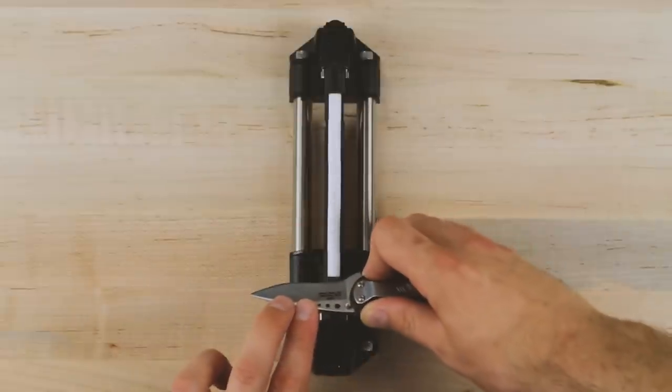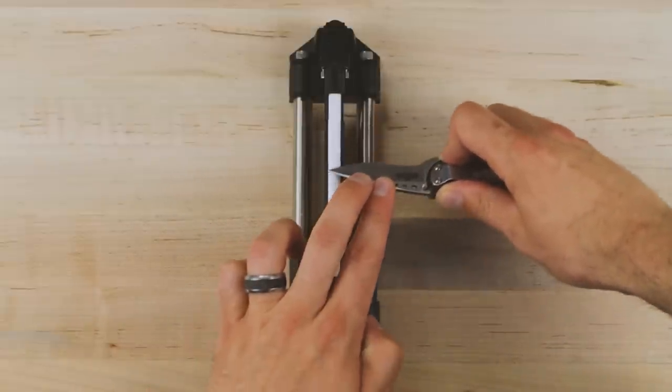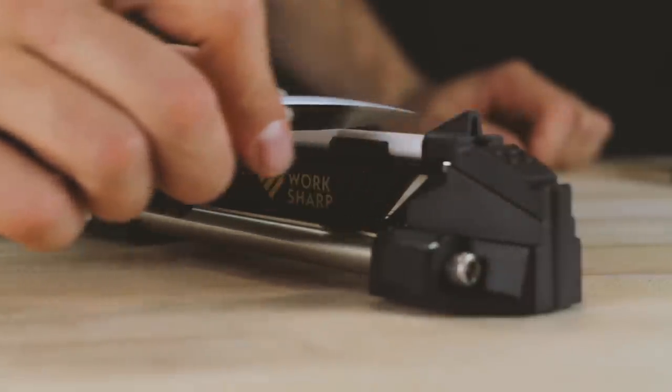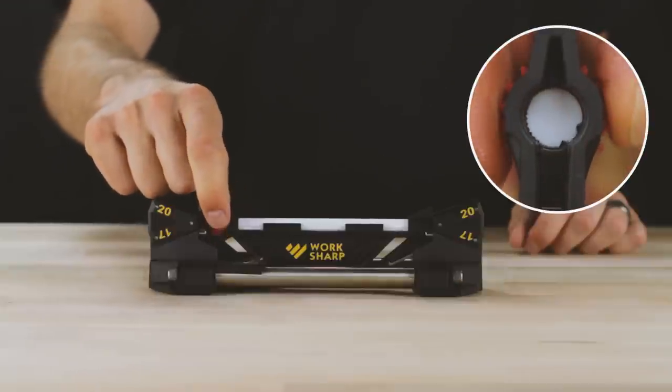Continue on same side of knife until a burr is raised. Now repeat the same number of strokes on the other blade bevel. Set the ceramic hone to the fine setting.